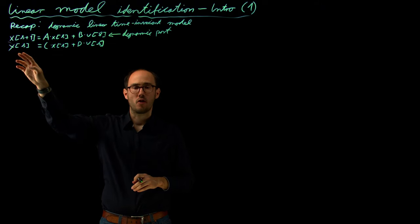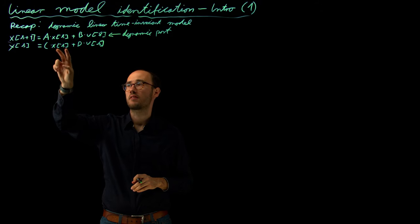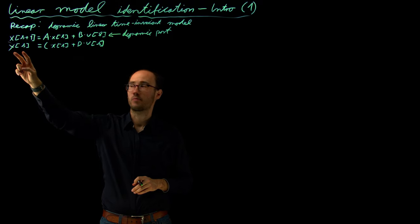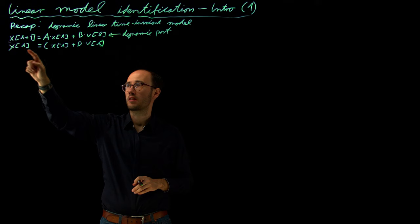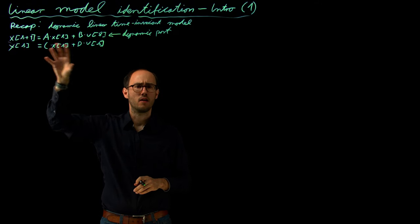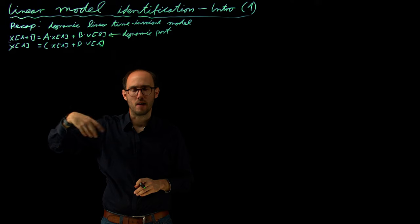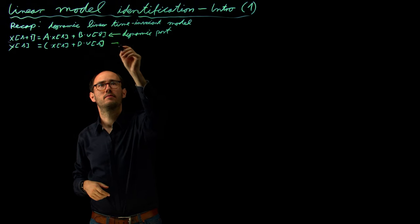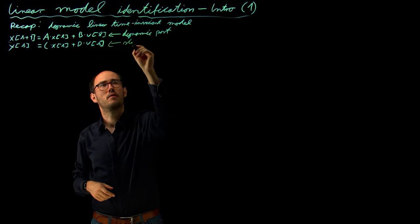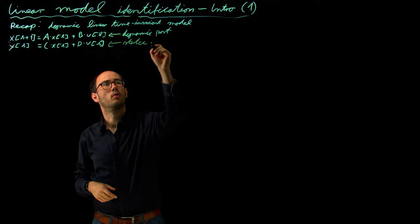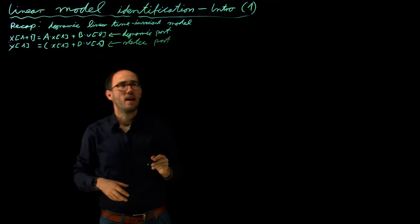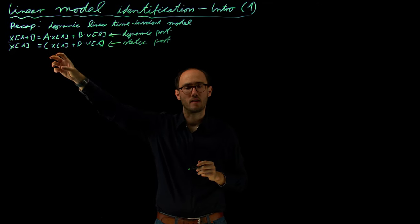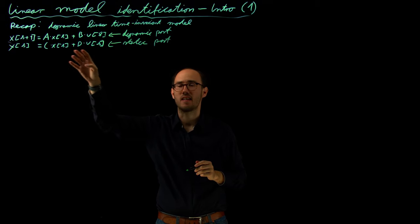Secondly, we have our measurement equation, which maps our states and inputs to the measurement Y. This is done at time step K, so there is no temporal component — this is a static or algebraic equation, and therefore our static model part. We are interested in identifying both parts to find the unknown parameters in A, B, C, and D.